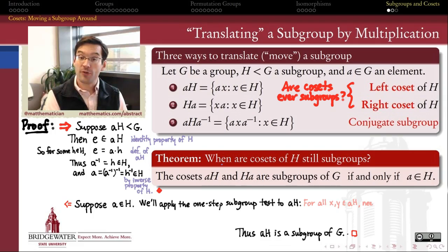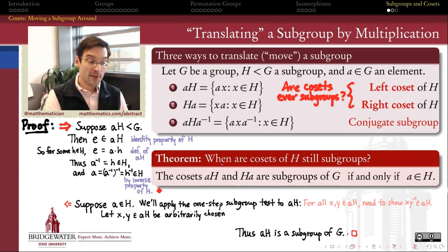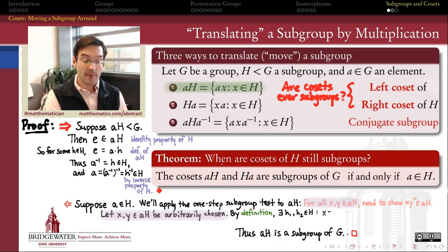So there the burden of proof is to show that for any two elements of AH, X and Y, that X times the inverse of Y also belongs to the set AH. So we let the universe pick an X and a Y out of the coset AH, arbitrarily. By definition of AH, that must mean that there are elements of H, call them H1 and H2, such that X is A times H1 and Y is A times H2.